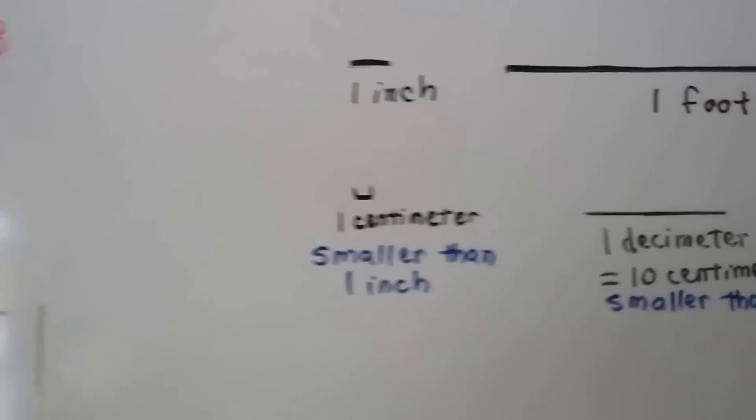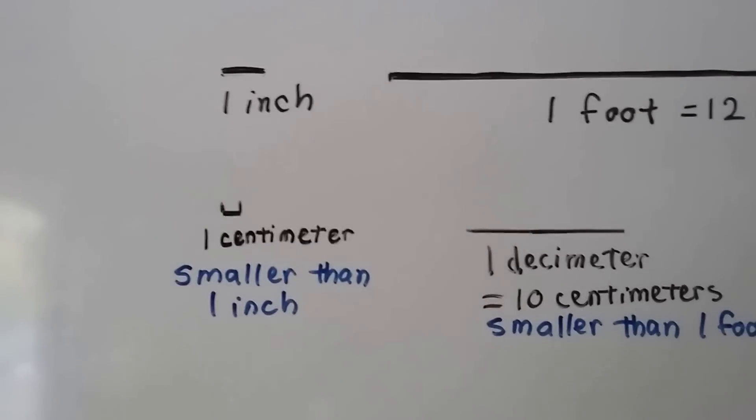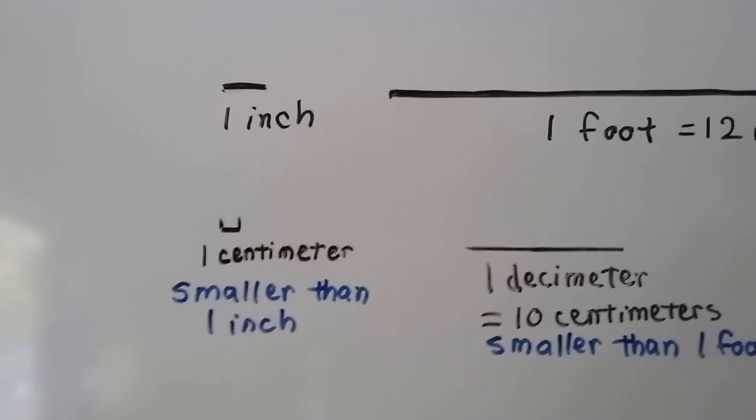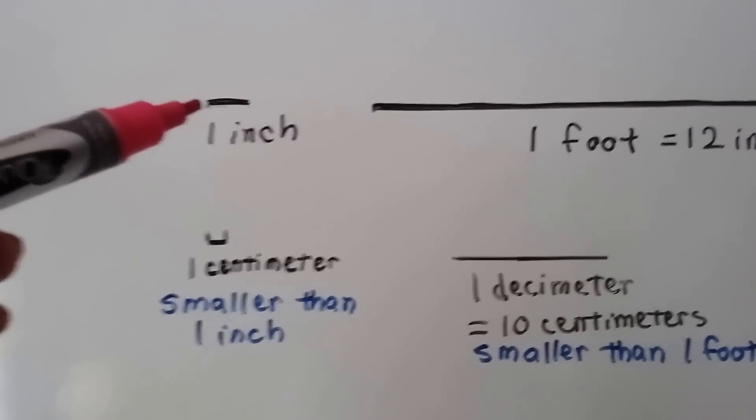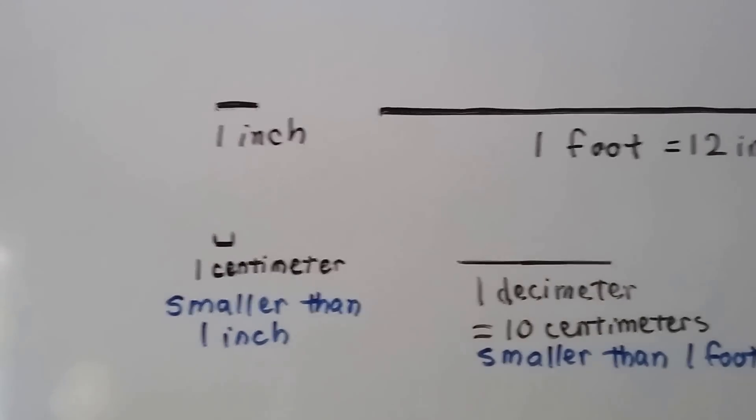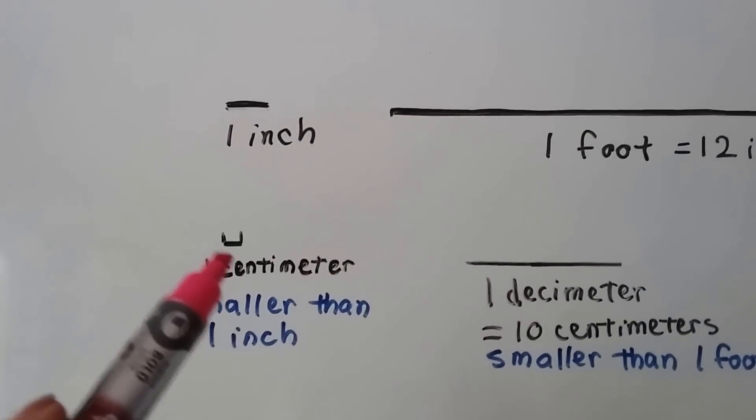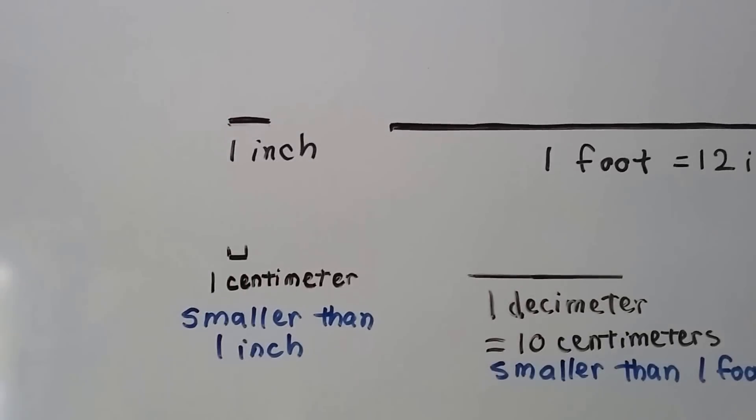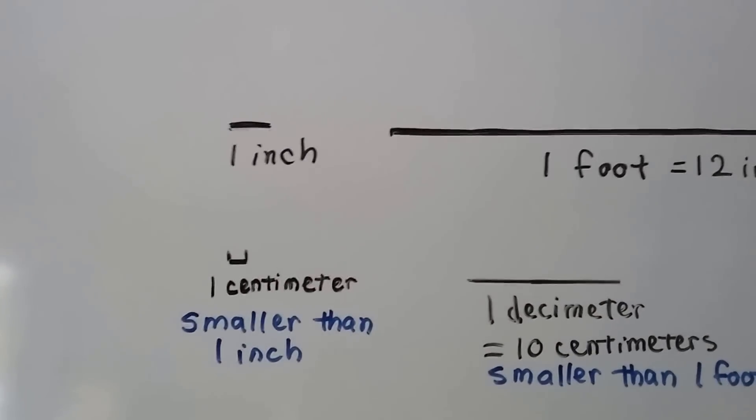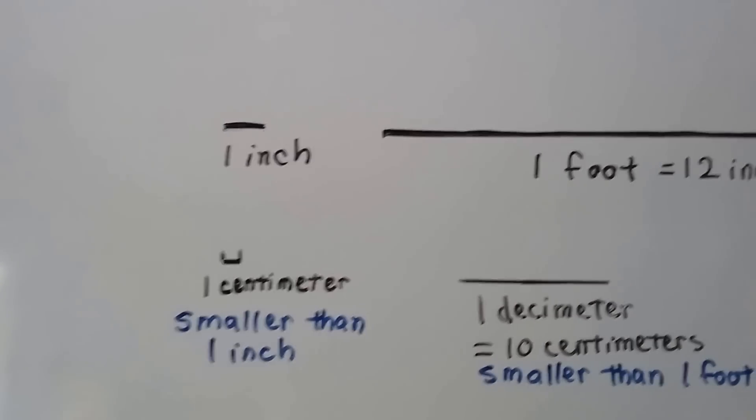I'm going to show you the difference between centimeters and inches, and meters and yards. We've learned that that's an inch. Well, that's a centimeter. Isn't that a lot tinier? There's about two and a half centimeters to each inch. So a centimeter is smaller than an inch.